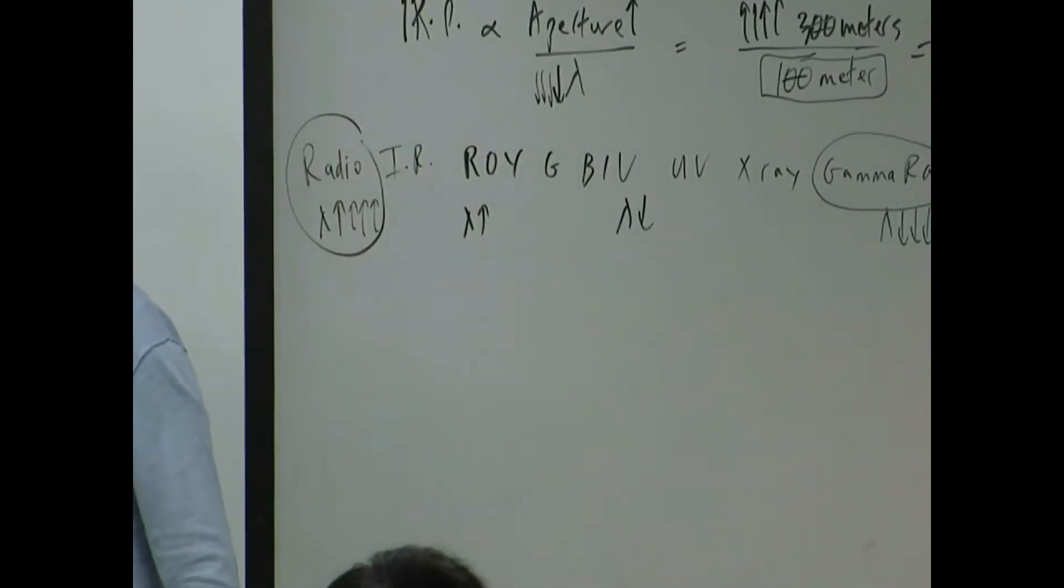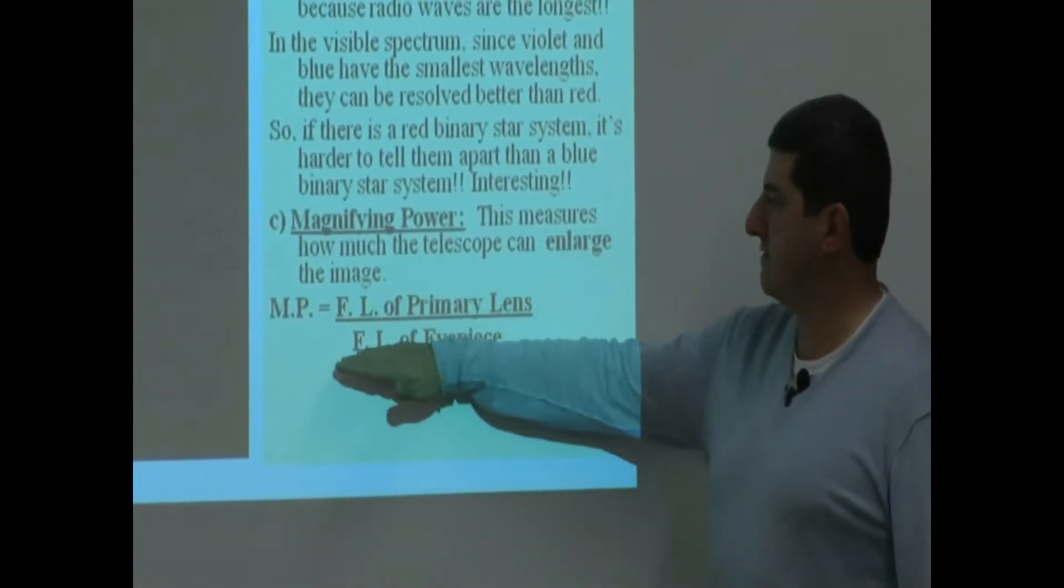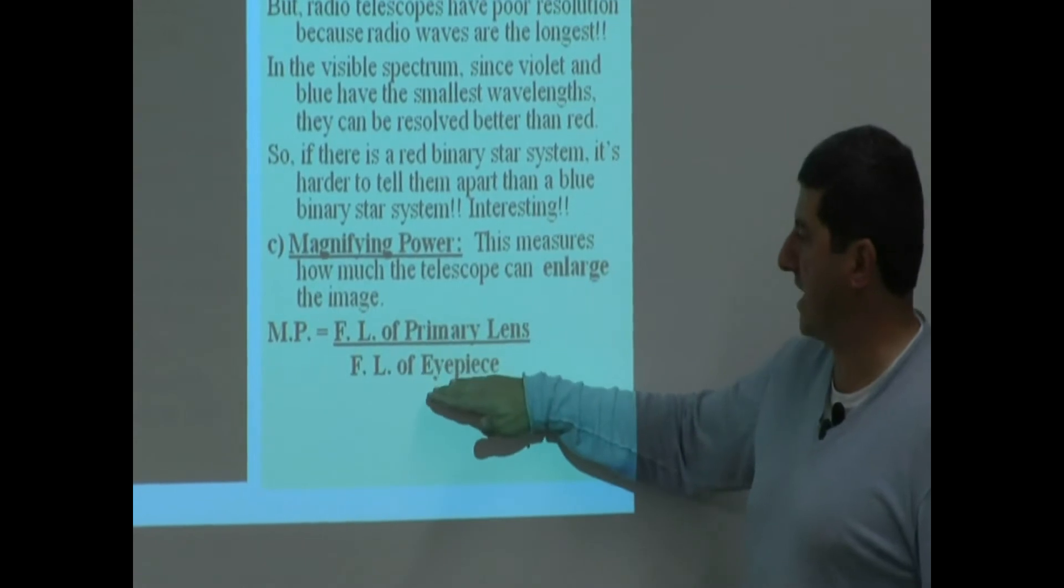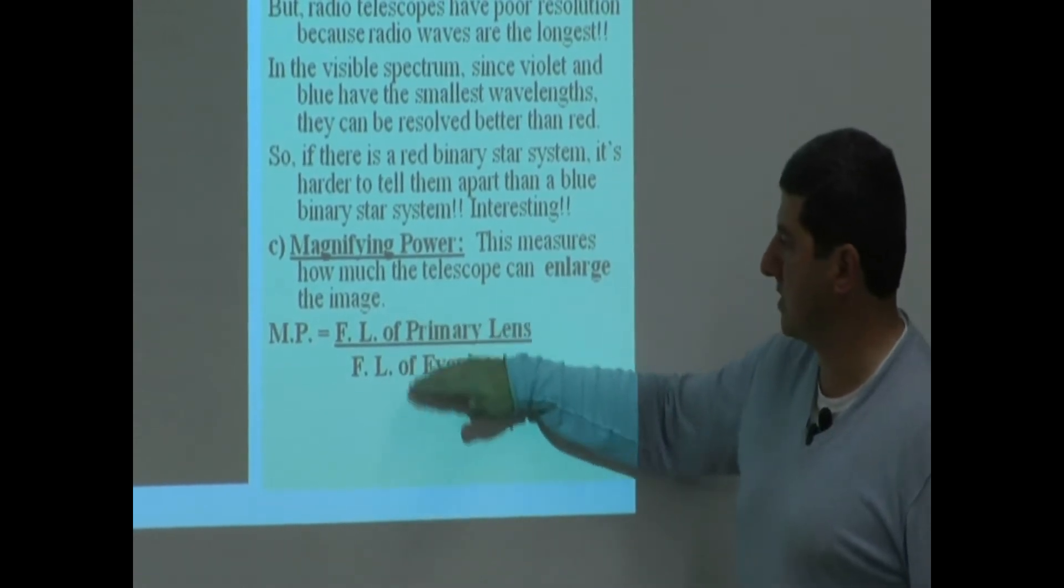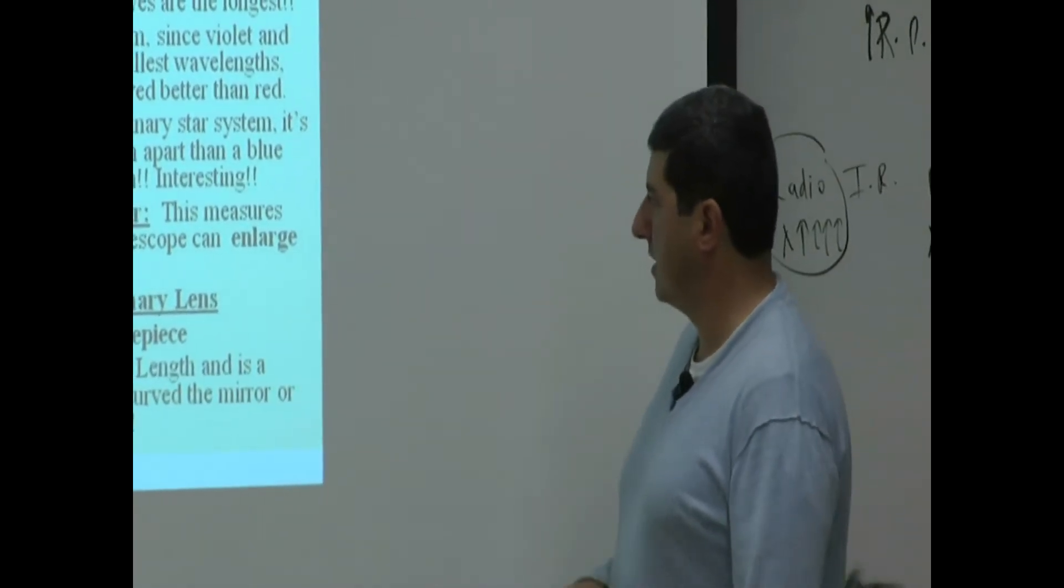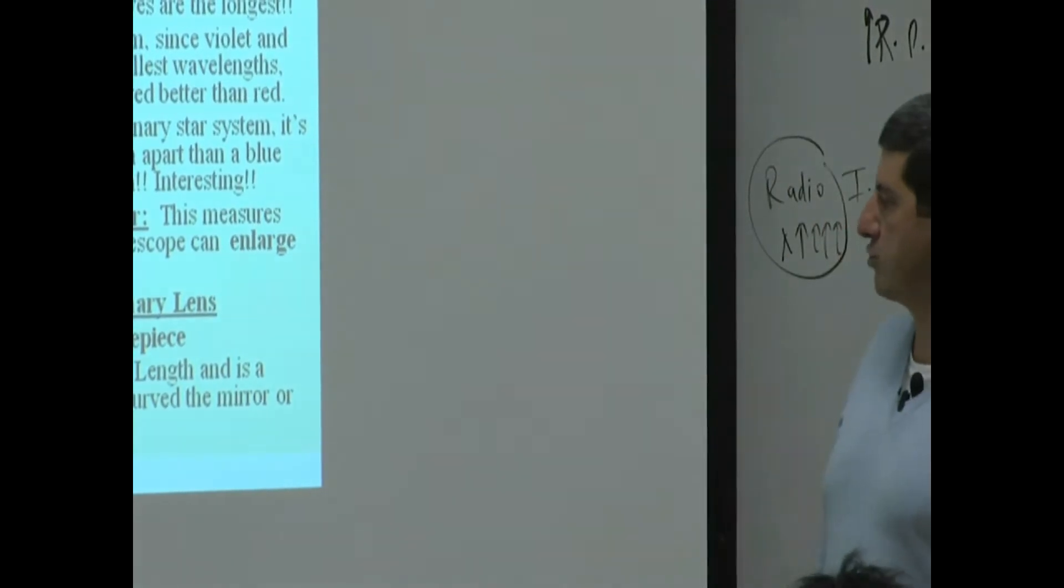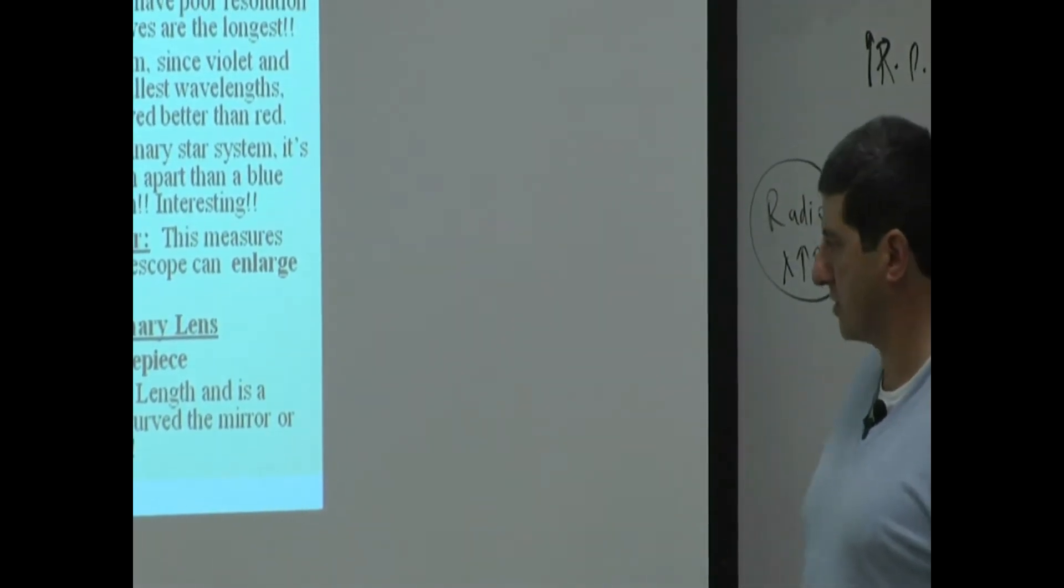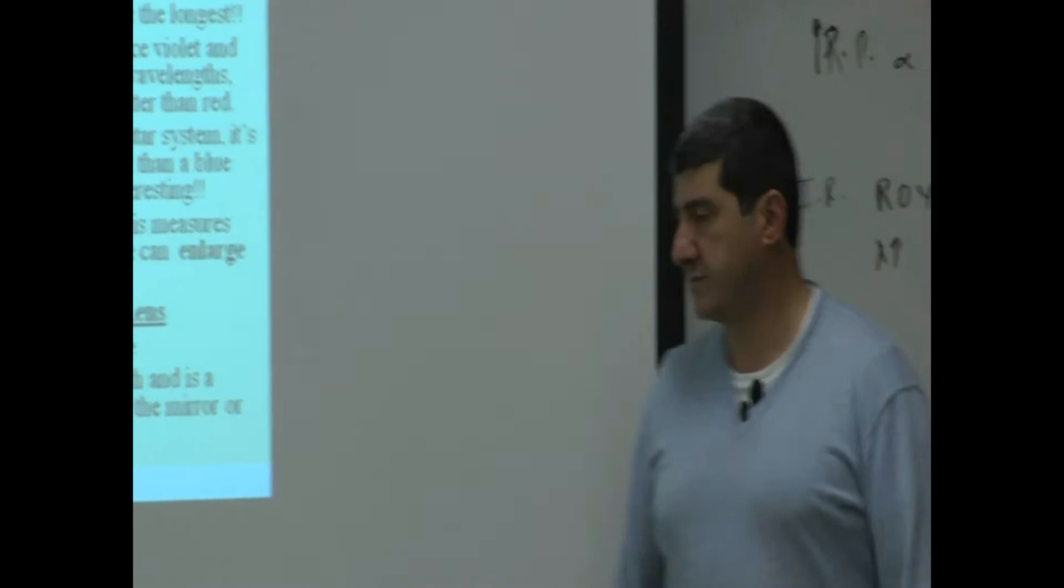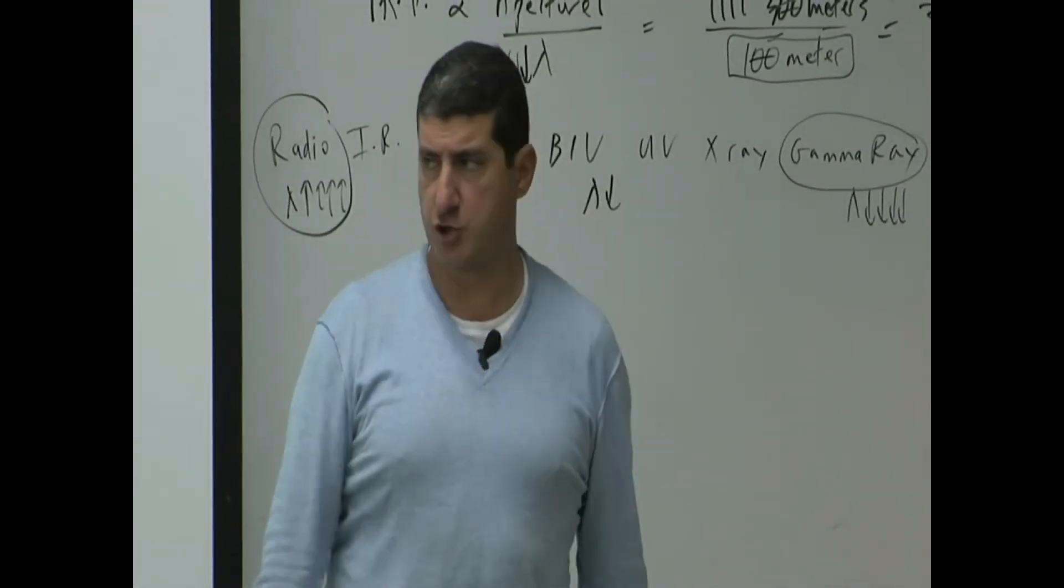So the magnification power of a telescope is the focal length of the primary lens divided by the focal length of the eyepiece. You divide the two focal lengths, and that gives you the magnification power. FL stands for focal length, and is a measure of how curved the mirror or lens surfaces are. So it's a feature of the curvature of the lens or the curvature of the mirror.